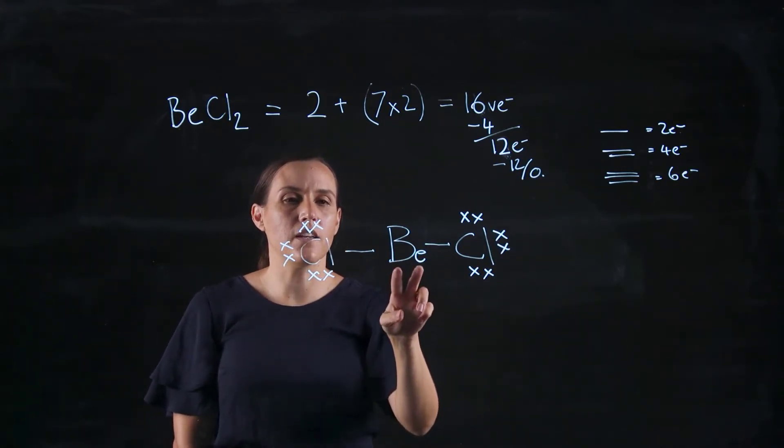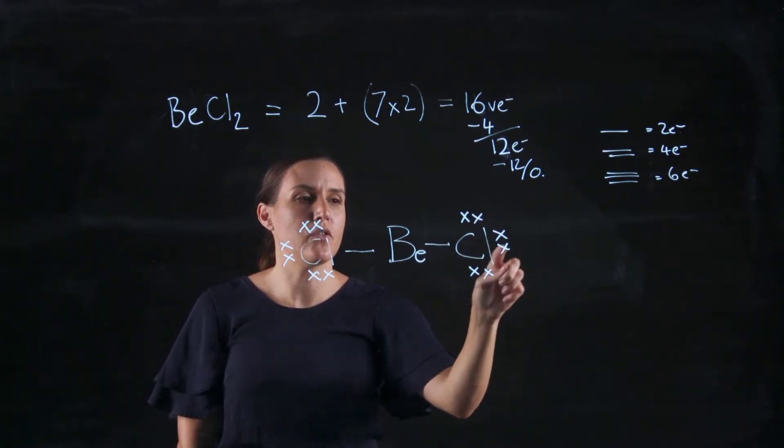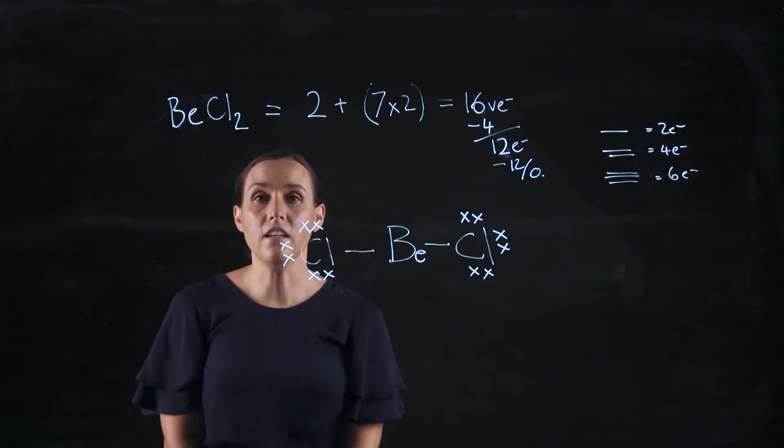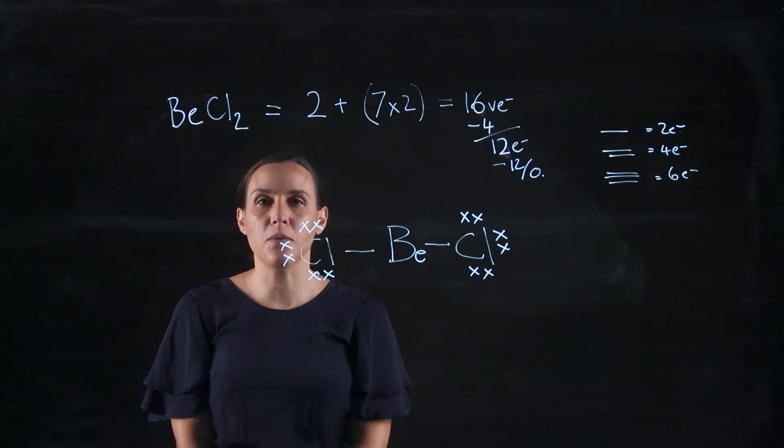So looking at the beryllium, it's got 2, 4, and the chlorines have 2, 4, 6, 8, 2, 4, 6, 8. So the chlorines have reached their octet and beryllium has not. But that's fine because beryllium is one of our exceptions. So boron and beryllium can have fewer than eight electrons.